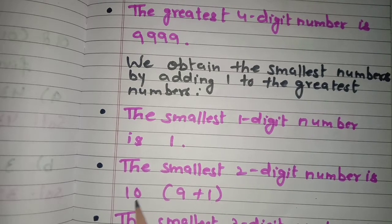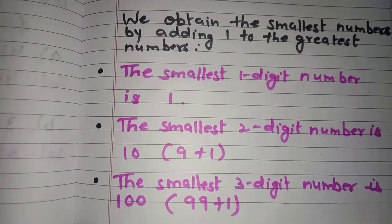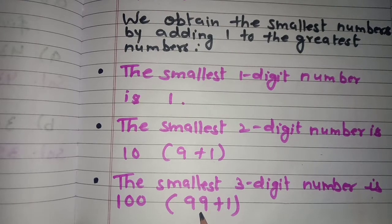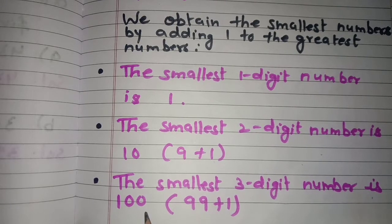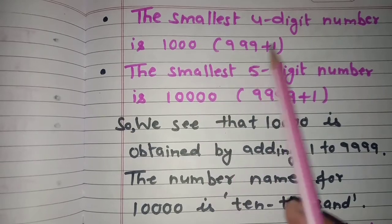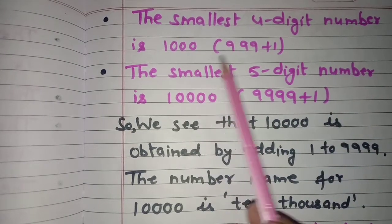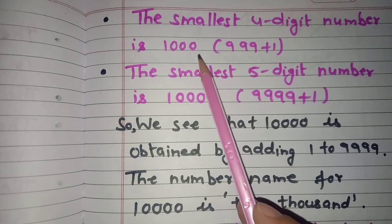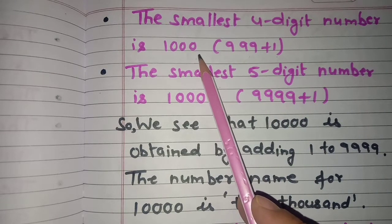10 is the smallest two digit number. The smallest three digit number can be obtained by adding one to the greatest two digit number, which is 99. When we add one to it we get 100, which is the smallest three digit number. The smallest four digit number is 1000 — obtained by adding one to the greatest three digit number, 999.